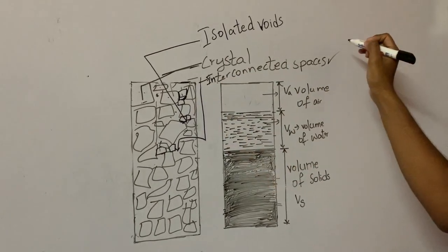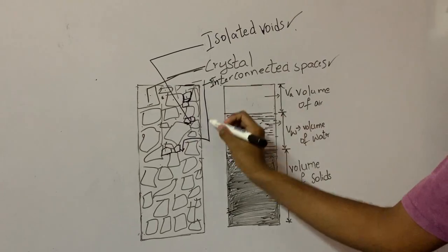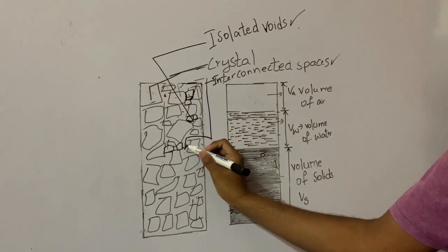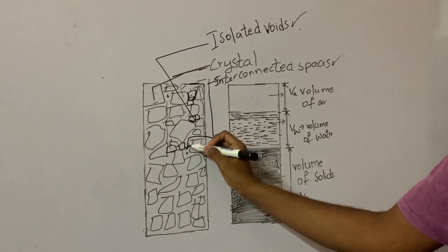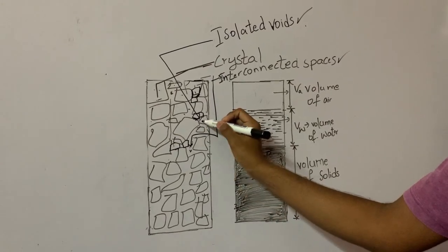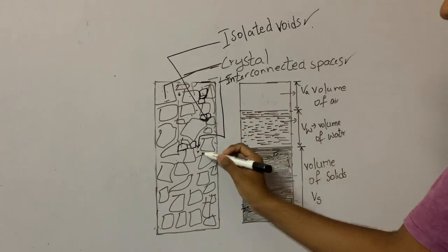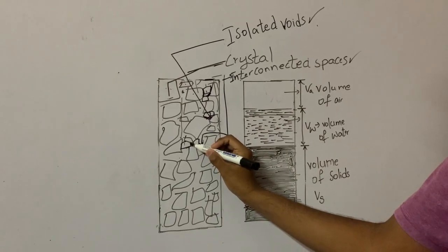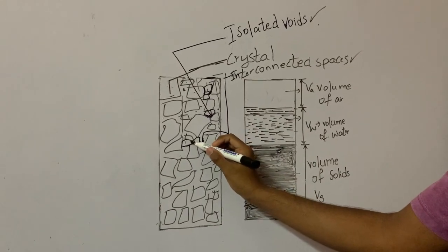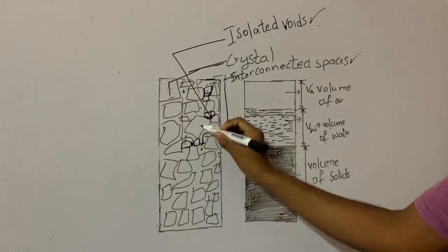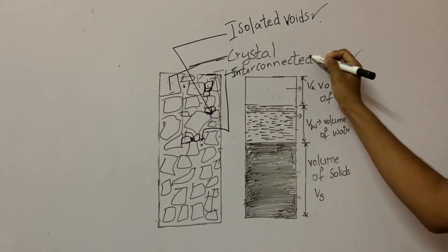The first type is interconnected spaces and the second type is isolated voids. You can see here these voids present between the crystals are interconnected — that is, there is a connection between those voids. Here you can see this void — this void is an isolated one. Similarly, this void is an isolated one. So there is no interaction between these two voids. These voids are called isolated voids and the other type is called interconnected voids.